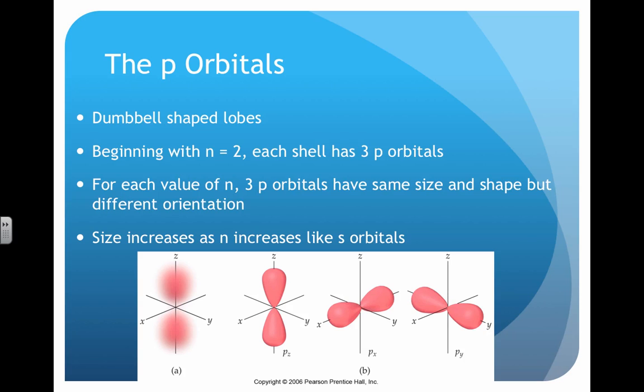But s orbitals aren't the only kind of sublevels. There are also p orbitals. These are dumbbell shaped as you see on the bottom. And the p orbitals begin to show up in the second energy level. Each shell has three p orbitals.